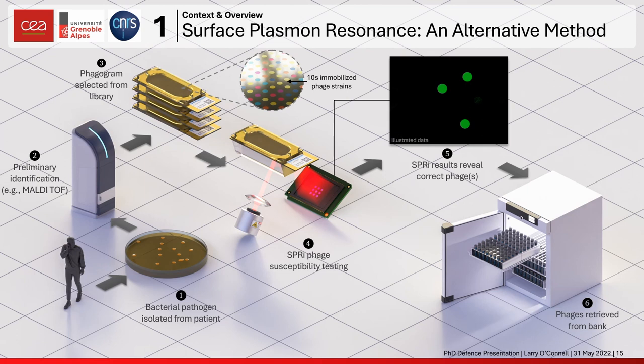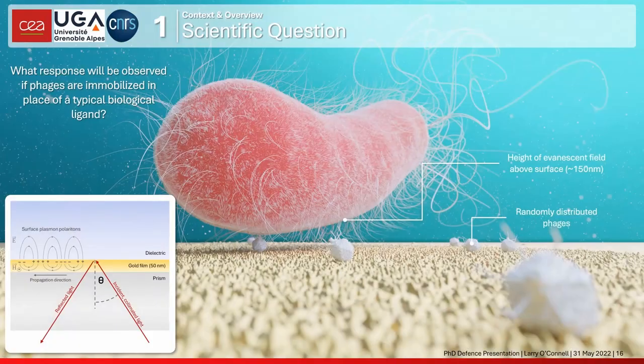This relies on the strengths of SPR: it's a label-free technique in a really physically compact form, allowing study of binding interactions with a large number of candidate phages all at once and in parallel. The hope is to do this kind of phage susceptibility testing much faster than a couple of hours. The scientific question is: what response will be observed if phages are immobilized on the SPR sensor surface in place of a typical probe like antibodies?